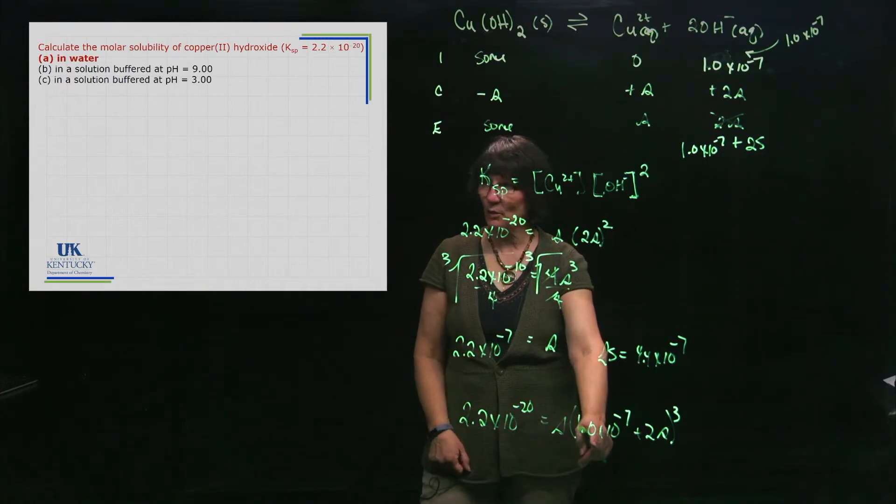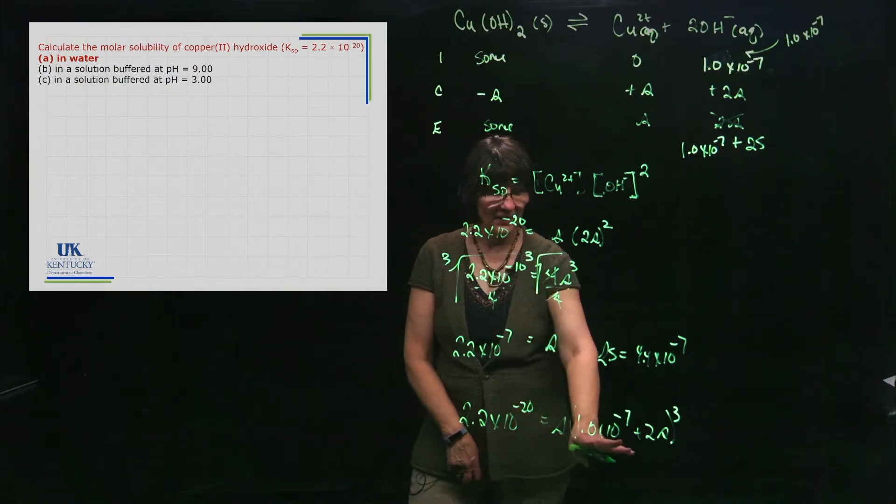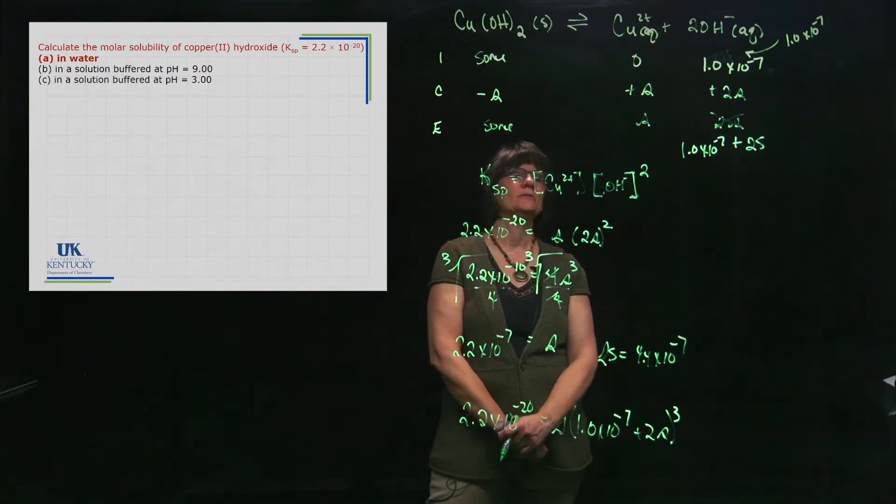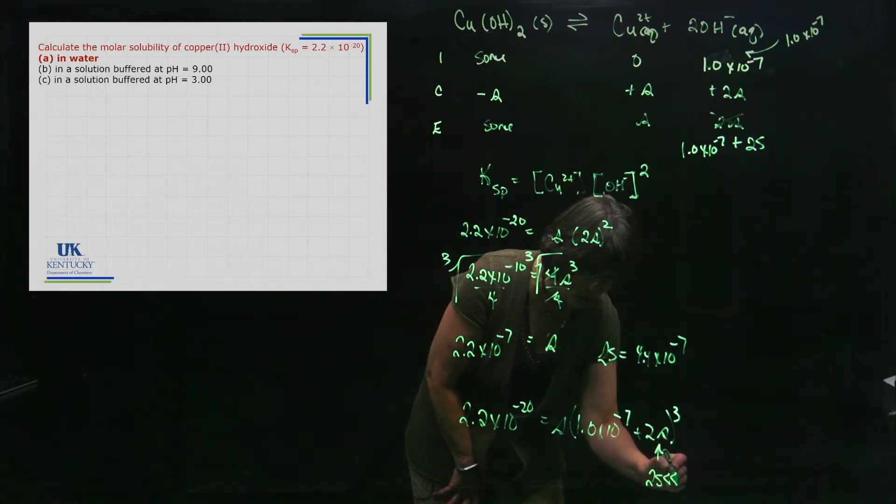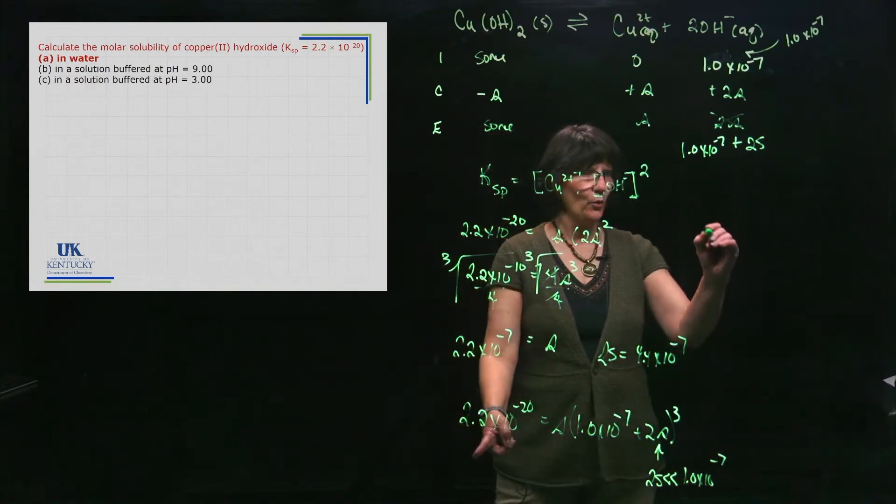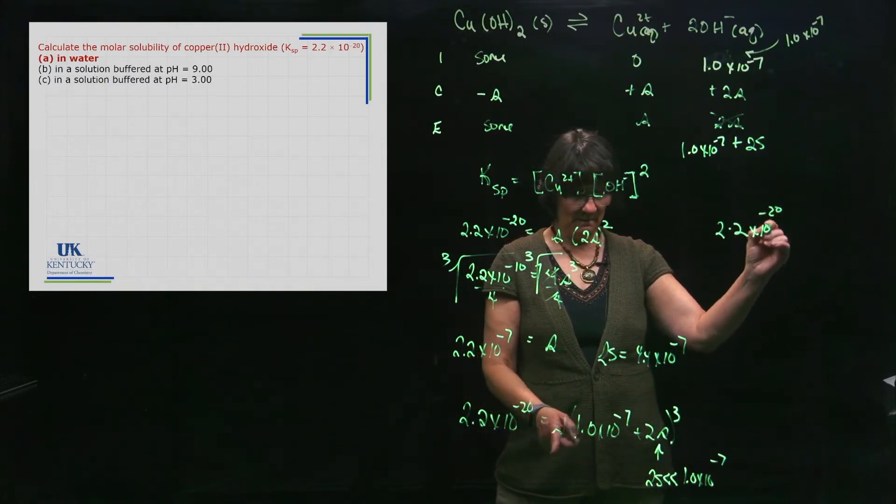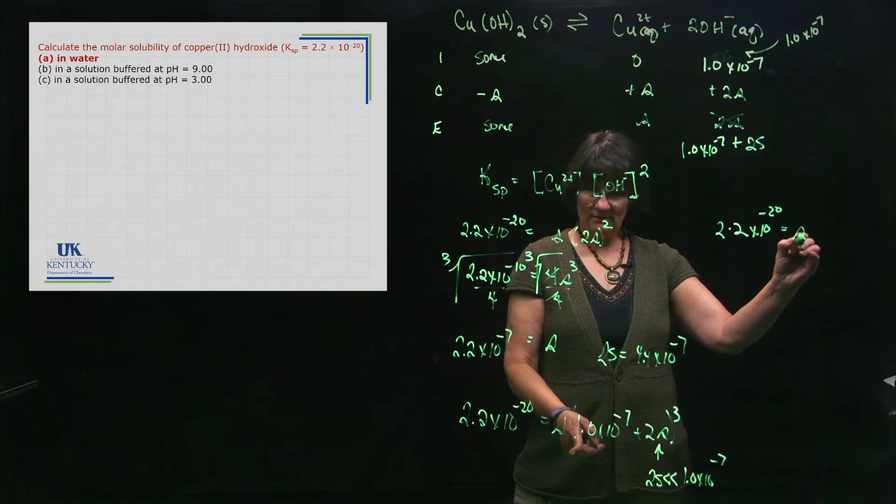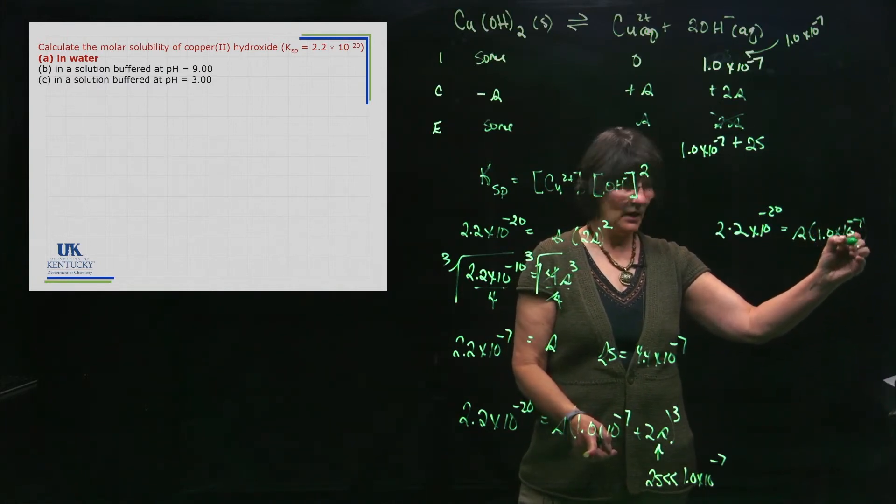Now we might say, well we couldn't assume that this was 0, maybe we could assume that this was 0. Now this thing is so tiny, but this is super tiny, and when you solve for s you can't make that assumption. Now you can try it. Let's try it. Let's assume that we can ignore this, so 2s, that 2s is much much smaller than 1.0 times 10 to the minus 7. Then it gets to be easy to solve. We have 2.2 times 10 to the minus 20 is equal to s times 1.0 times 10 to the minus 7 cubed.